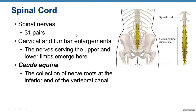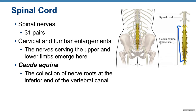We have 31 pairs of spinal nerves. The cervical and lumbar enlargements are where the nerves that innervate the upper and lower limbs emerge. The cauda equina, as I already mentioned, is a collection of nerve roots at the inferior end of the vertebral column. The spinal cord ends, and those are nerves — remember, the spinal cord is part of the central nervous system, and the cauda equina, which means 'horse tail,' is part of the peripheral nervous system, because those are nerves, not spinal cord.